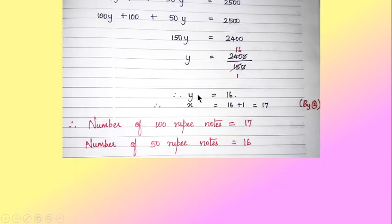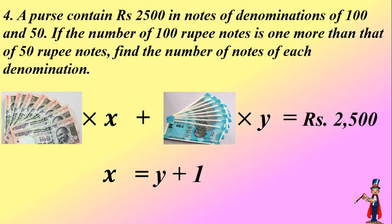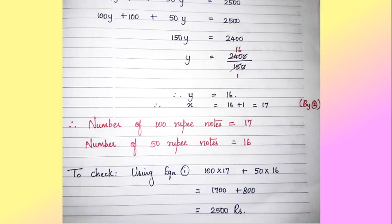After getting the value of y, we replace it in equation 2: x = y + 1 = 16 + 1 = 17. So the number of 100 rupee notes is 17 and the number of 50 rupee notes is 16. You can verify by substituting back into equation 1: 100 × 17 + 50 × 16 = 1700 + 800 = 2500. You found out how many notes of each denomination are in your purse. That's it, thank you.